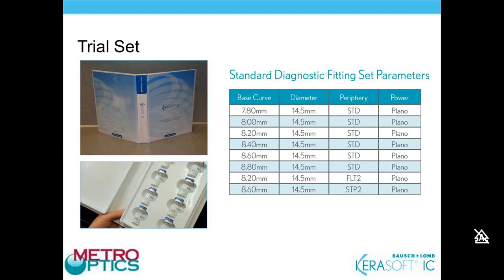The 8.2 flat-2 lens has a relatively steep base curve of 8.2 with a flat-2 periphery equivalent to an 8.6 periphery. This is the lens you'd use for a central nipple cone with a flatter corneal periphery. The fitting steps and evaluation criteria will help you determine when to select each of these lenses.